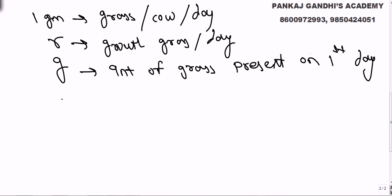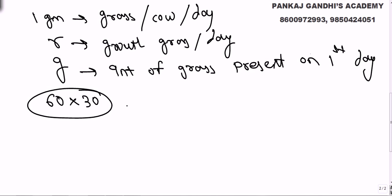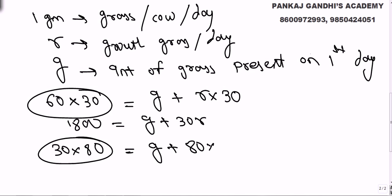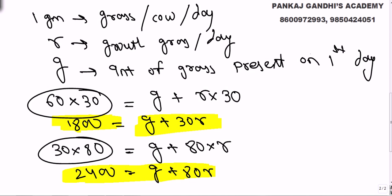For 60 cows per day needing 60 grams over 30 days, total grass needed is 1800 grams, which comes from g plus 30r. For 30 cows eating in 80 days, that's 2400 grams, equal to g plus 80r. So our two equations are: 1800 = g + 30r and 2400 = g + 80r.